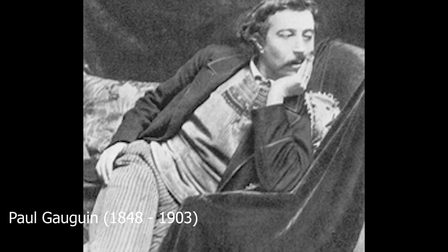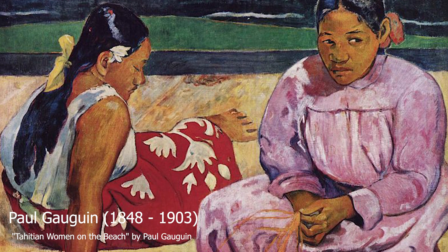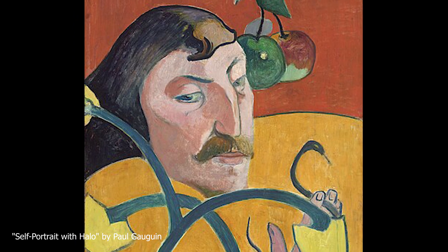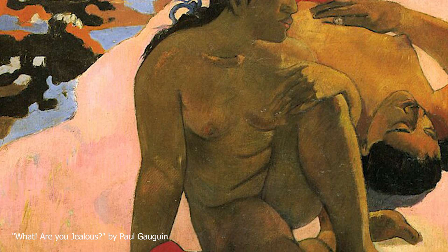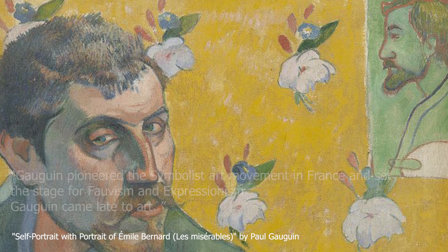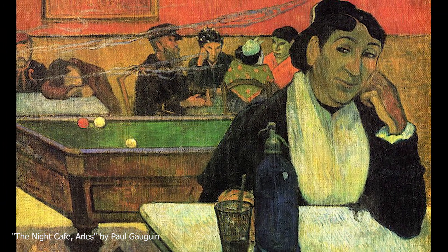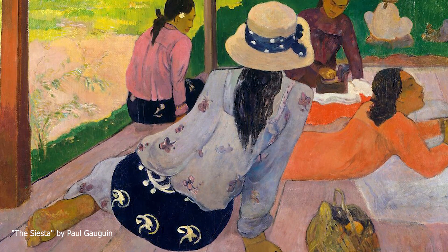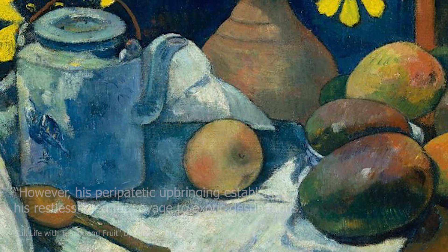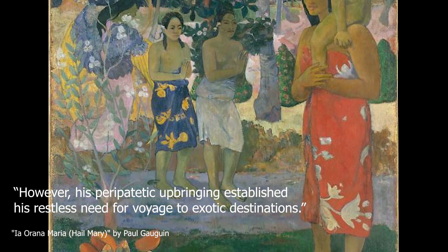Next we have Paul Gauguin. One of the leaders of the post-impressionist movement, Paul Gauguin is one of the most significant French artists to be initially schooled in Impressionism, but who broke away from its fascination with the everyday world to pioneer a new style broadly referred to as symbolism. Gauguin pioneered the symbolist art movement in France and set the stage for fauvism and expressionism. There is little in his early life to presage his phenomenal artistic career; however, his peripatetic upbringing established his restless need for voyage to exotic destinations.